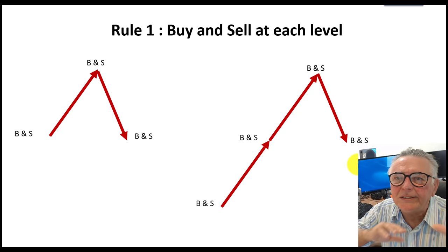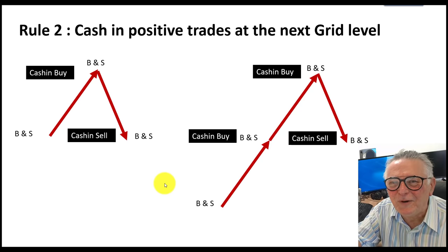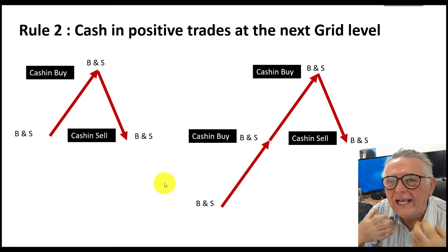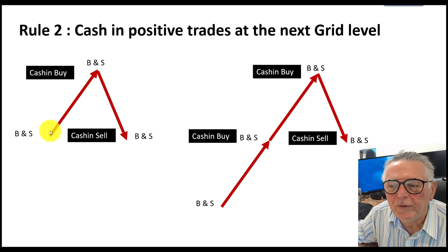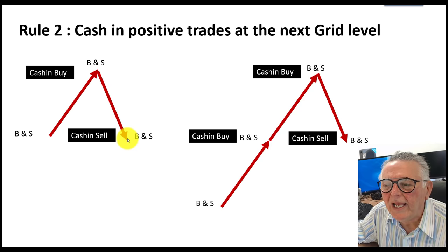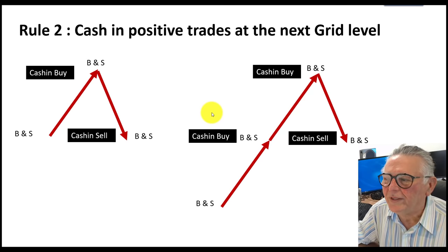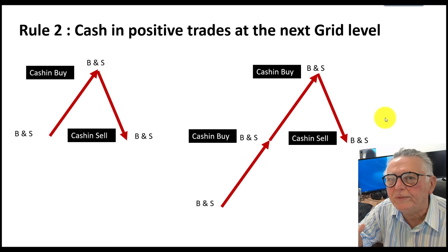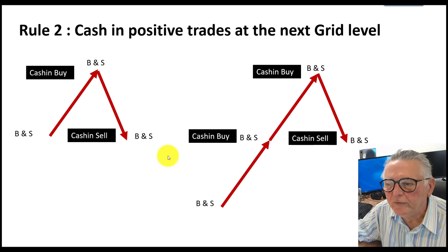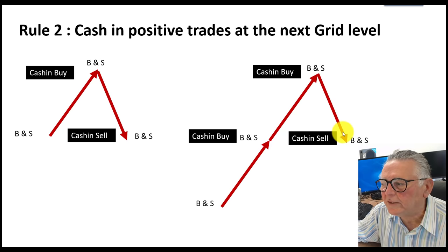Rule two follows on from rule one: you cash in your positive deals as they reach the next grid level. Using that example, you enter a buy and a sell — the buy goes positive as it reaches the next grid level and you cash it in. Then it comes back and reaches another grid level, and you cash in the sell that was successful. You leave the others open, and I'll show you why. These power movements — where price goes up and down or up twice as much as it goes down — are the ones which create a lot of wealth.